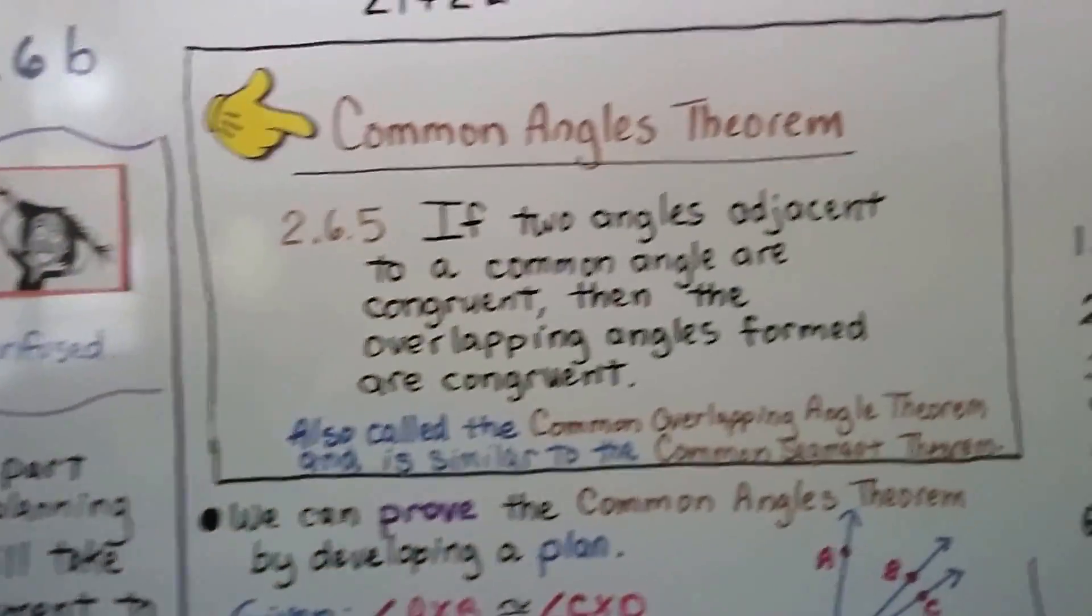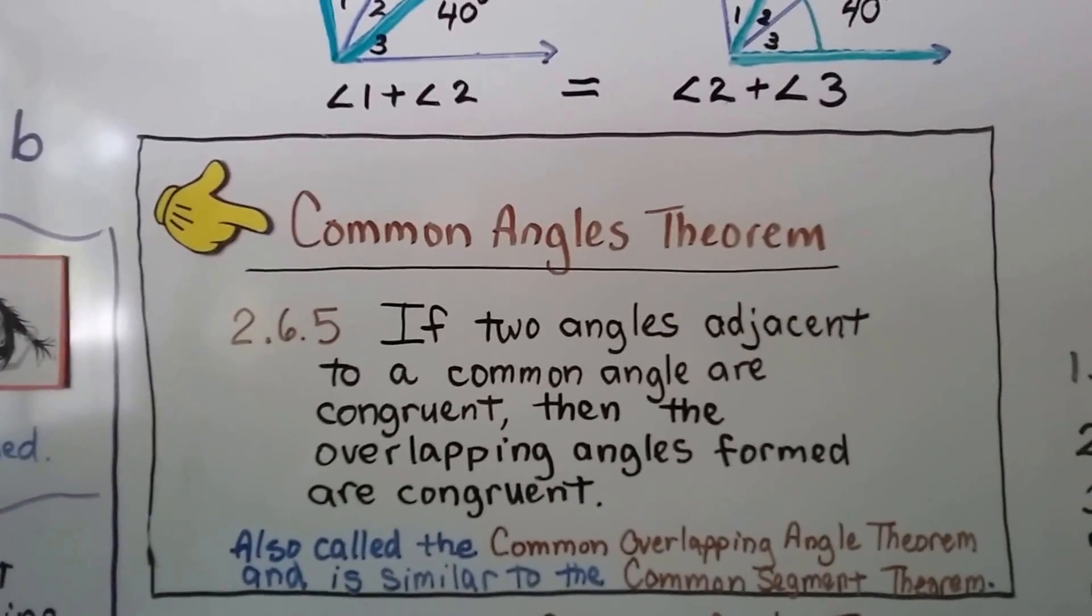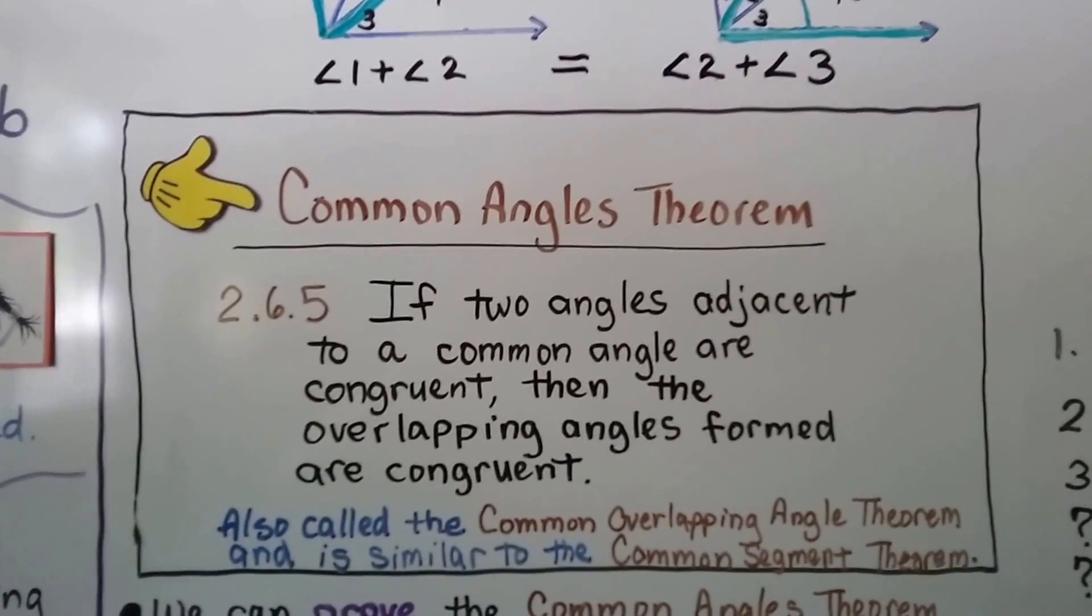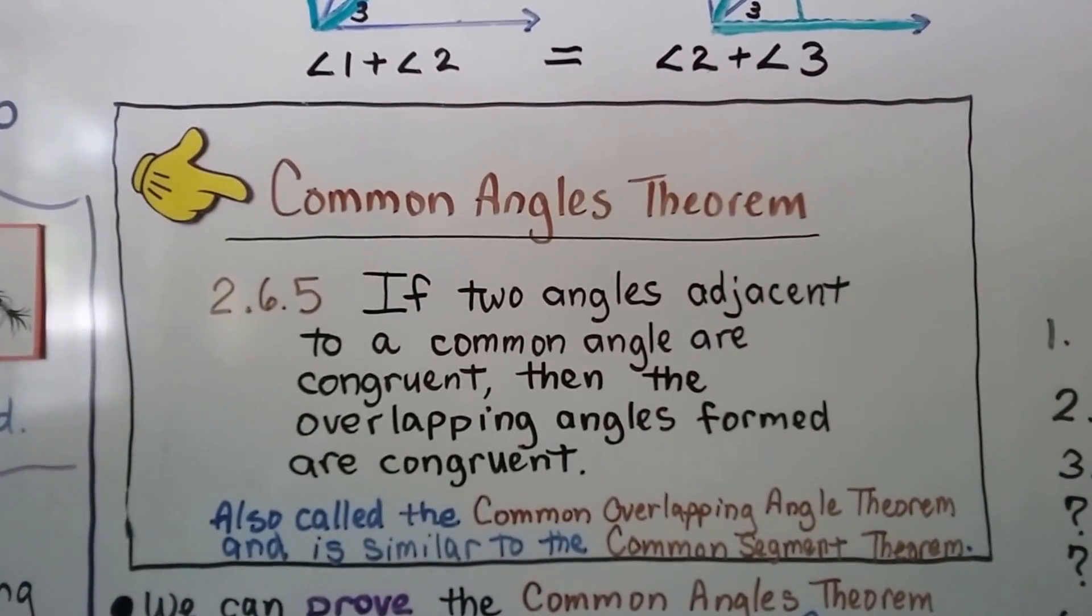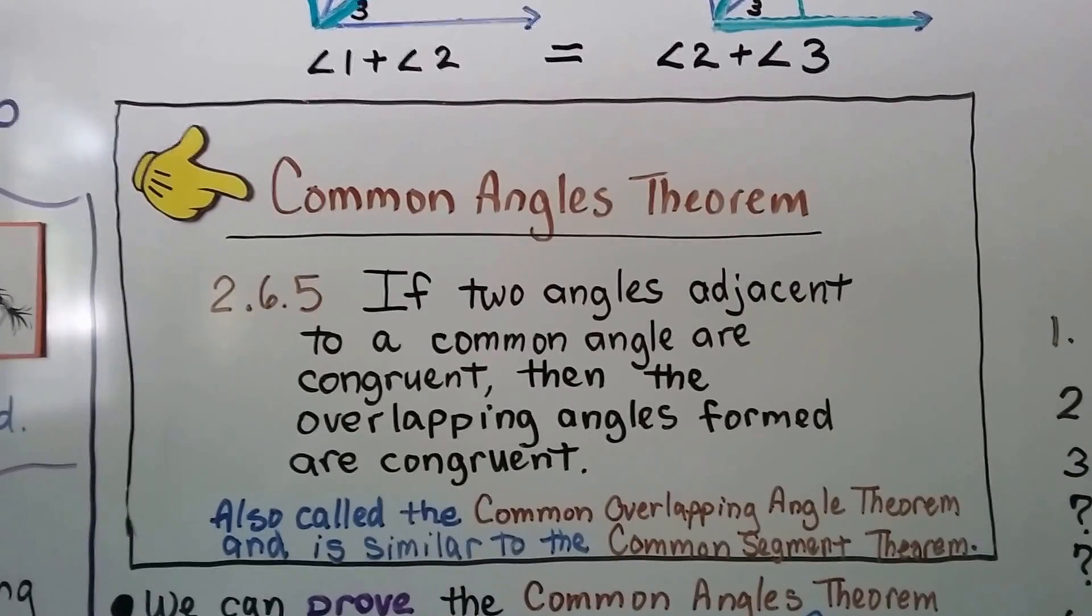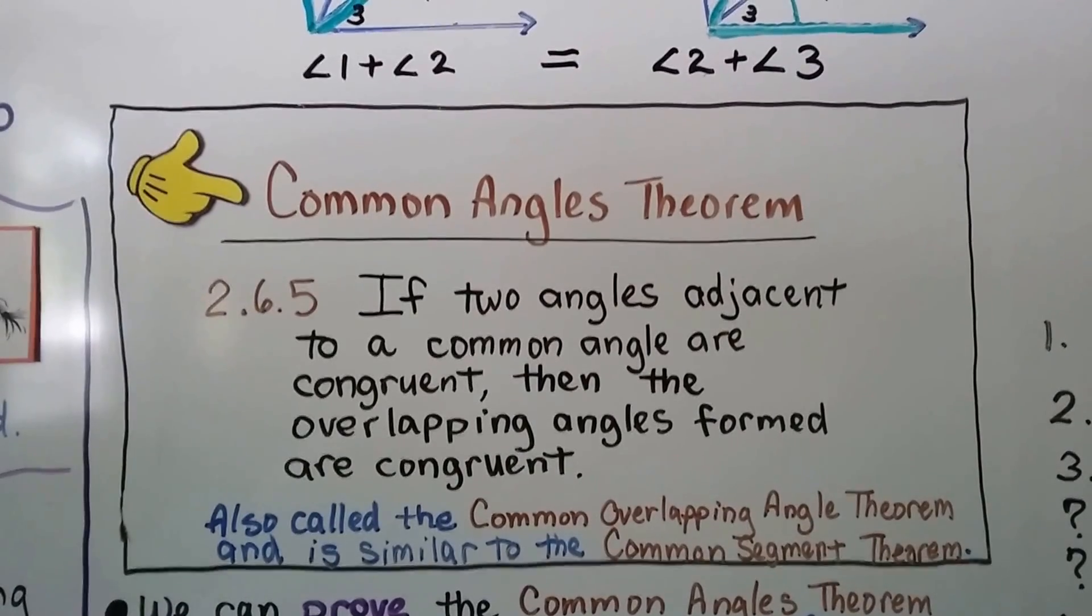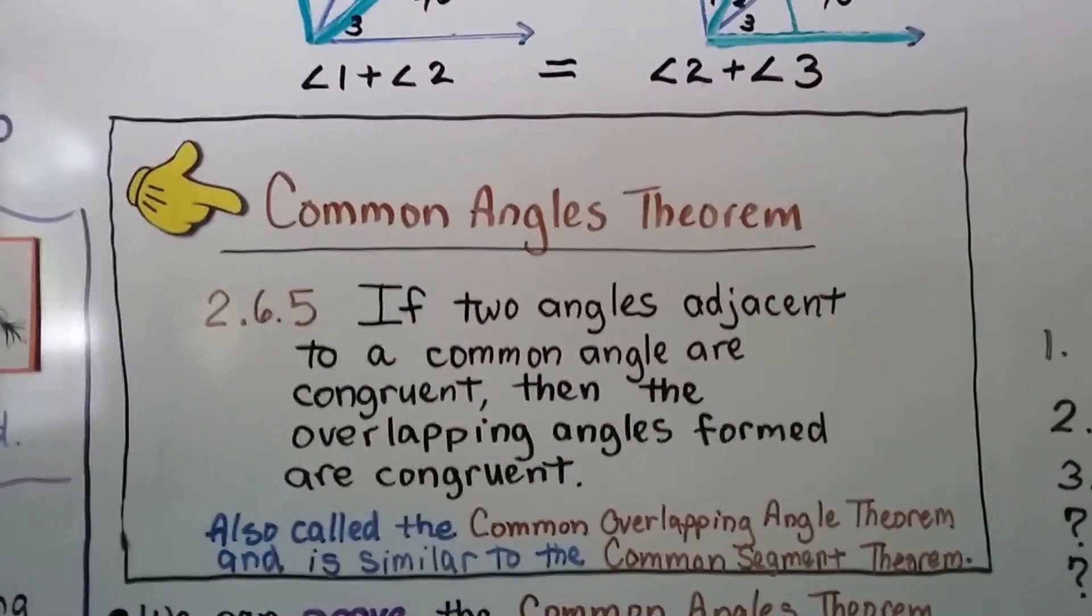I have a theorem for you. It's number 2.6.5, the Common Angles Theorem. It says if two angles adjacent to a common angle are congruent, then the overlapping angles formed are congruent. This is also called the Common Overlapping Angle Theorem, and it's similar to the Common Segment Theorem that we're going to talk about in the next lesson.